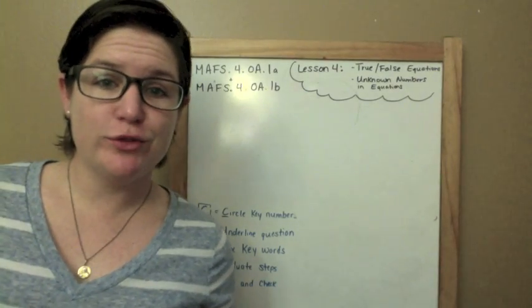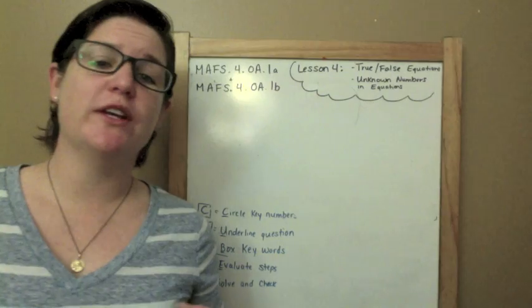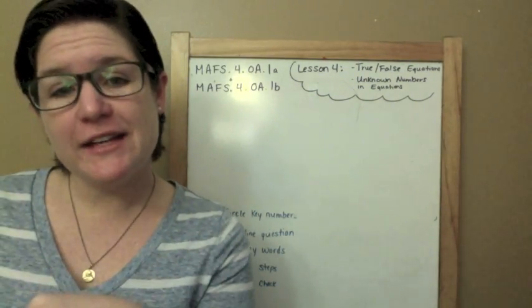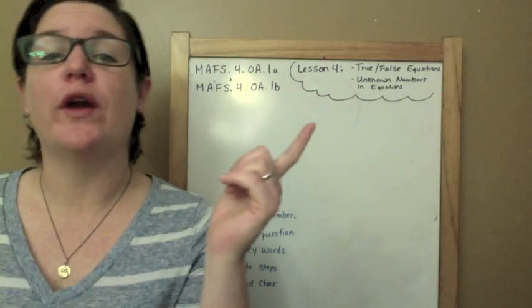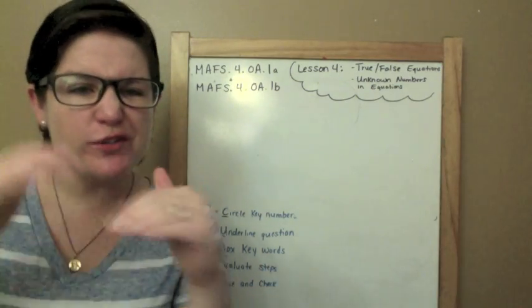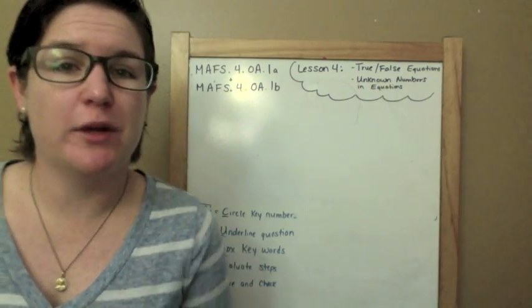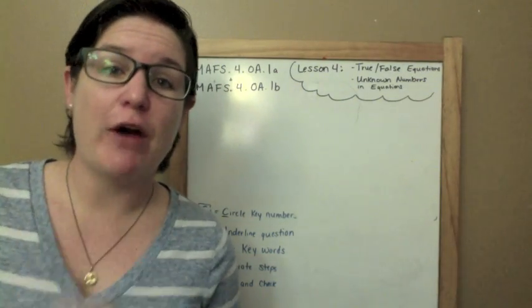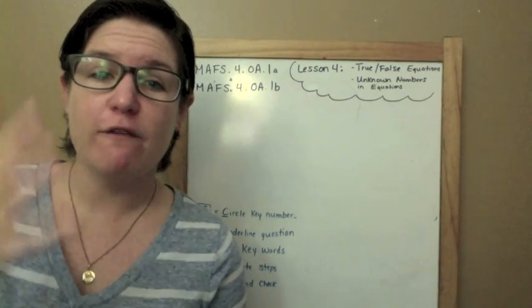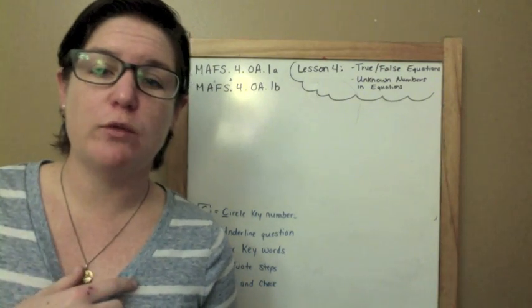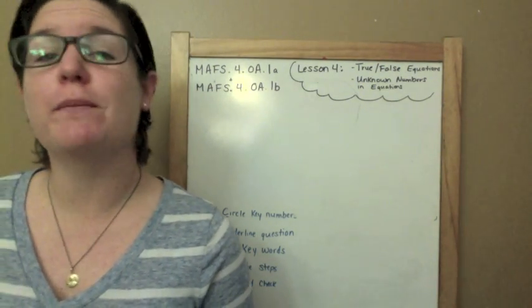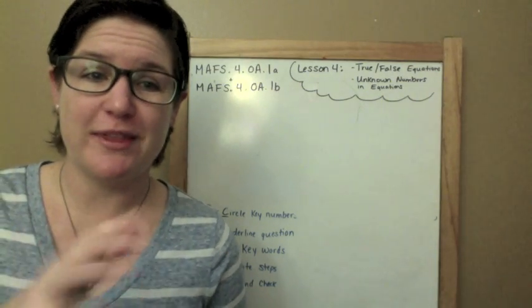Alright YouTubers, today we're going to be working on MAFS.4.OA.1a and 0.1b. These are the little sub-standards so we're combining them for one lesson. This is lesson four. Again, you're in How to Pass the Math FSA Fourth Grade Edition. And today we'll be working on true and false equations and unknown numbers and equations.